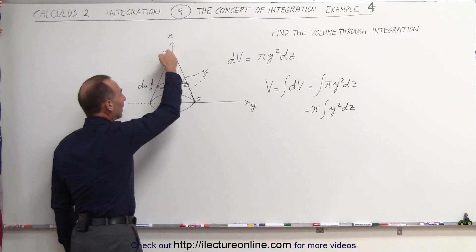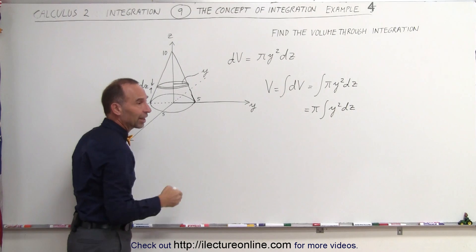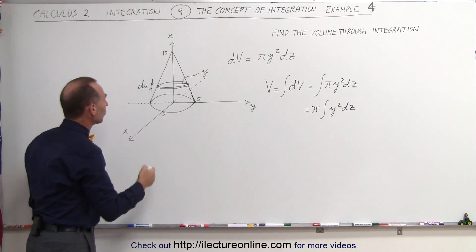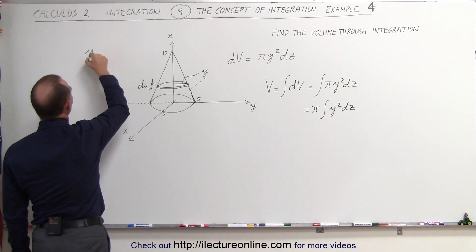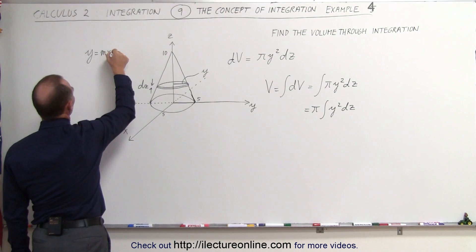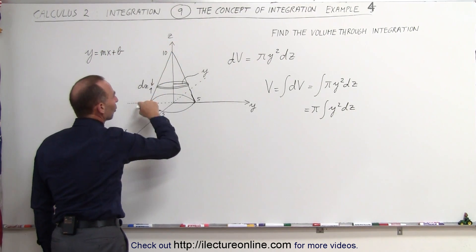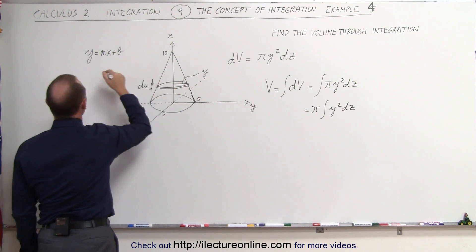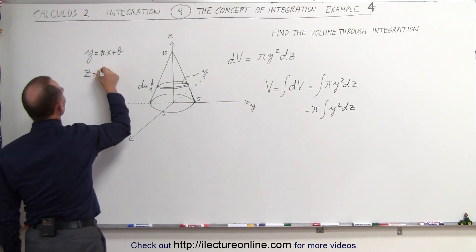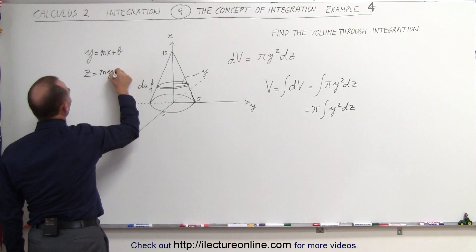So we have to find a way to express y in terms of z. We'll go back to the edge of this cone right here, and that looks like a straight line. That reminds us of the equation y equals mx plus b. But in this case, the vertical axis is z and the horizontal axis is y. So we'll write this as z is equal to my plus b.